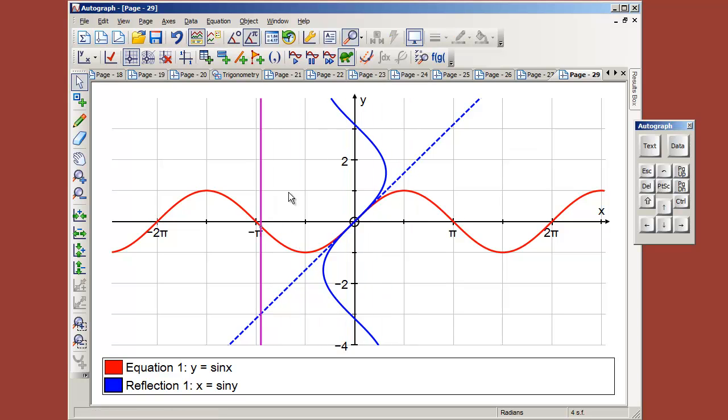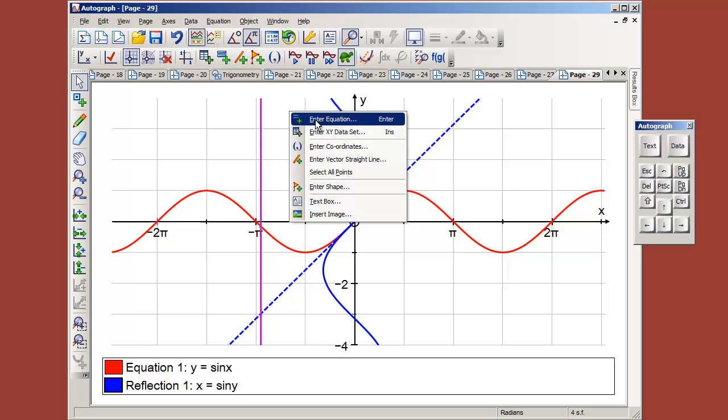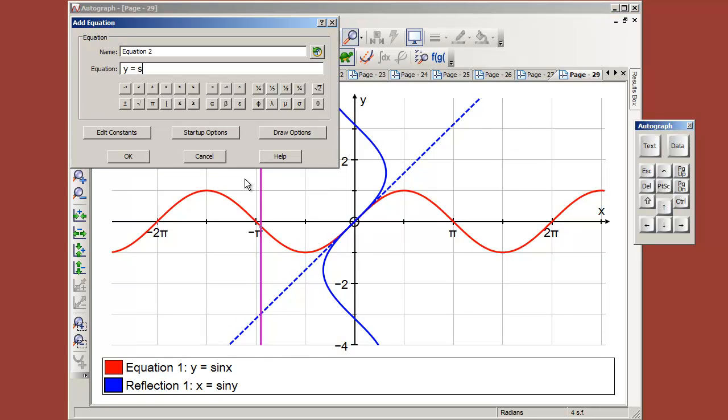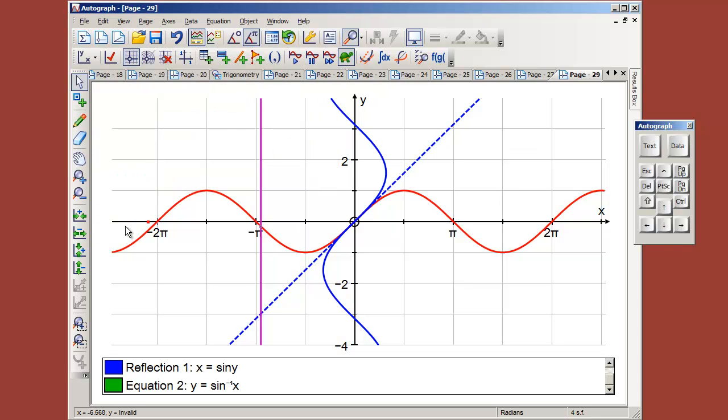So let's ask the computer now to draw y equals sine to minus 1 of x. Now, there's a minus 1 button here, which is quite handy, and that x follows, and you click OK. Now, the slow plot at the moment means that there's nothing here. There's no function that exists.